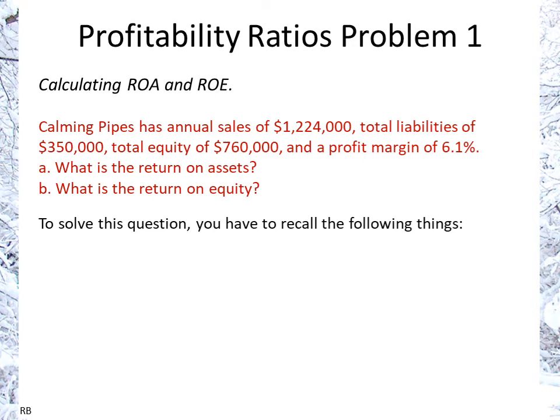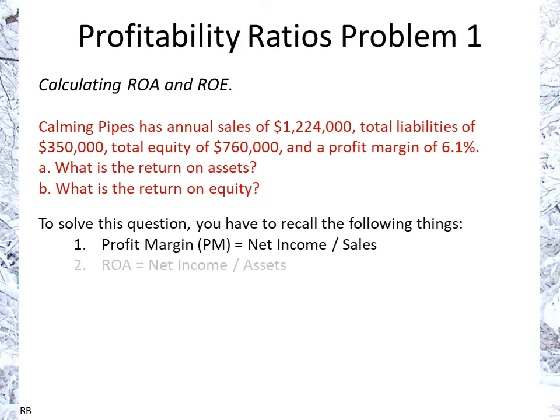To solve this question, we need to recall a couple of things. One is that the profit margin is net income over sales — also called return on sales — so the 6.1% is a return on the sales. The return on assets is net income over average or total assets. Net income over equity is the return on equity.